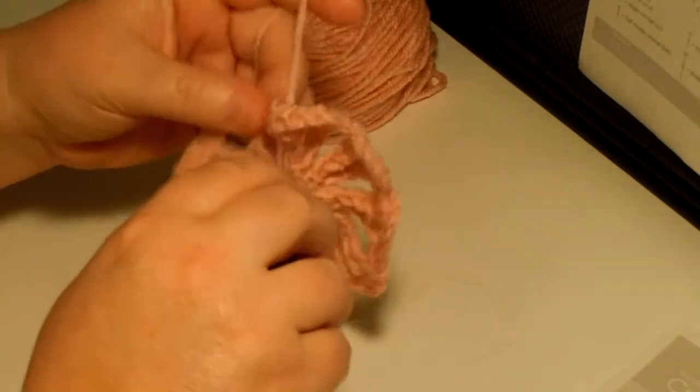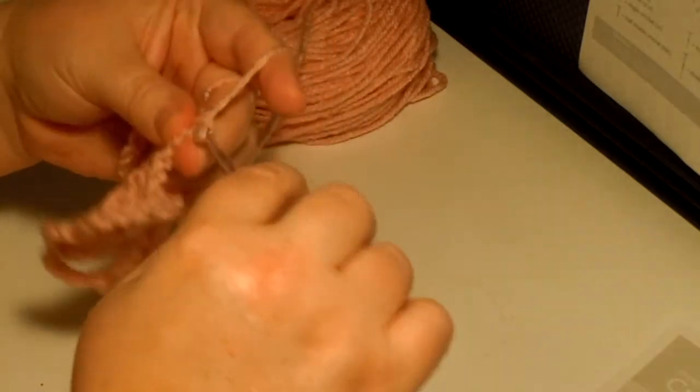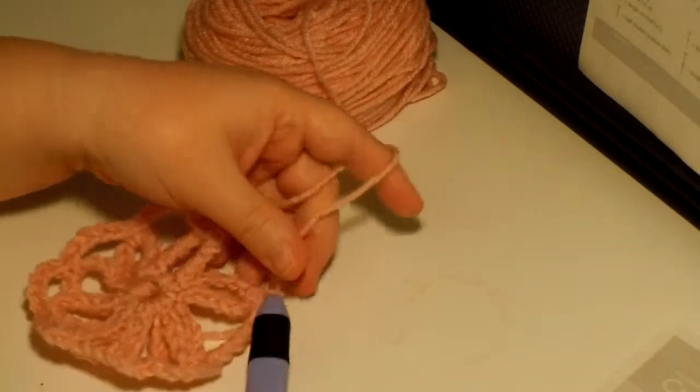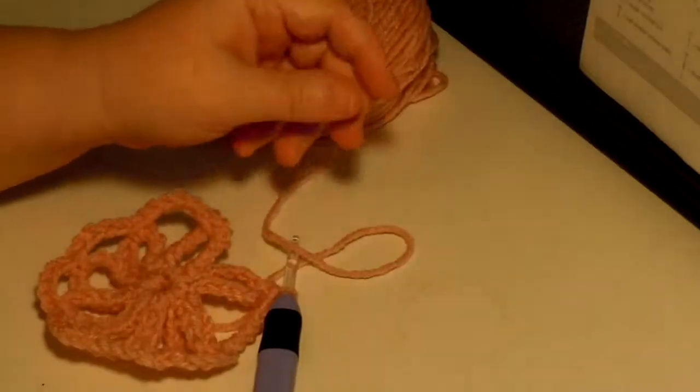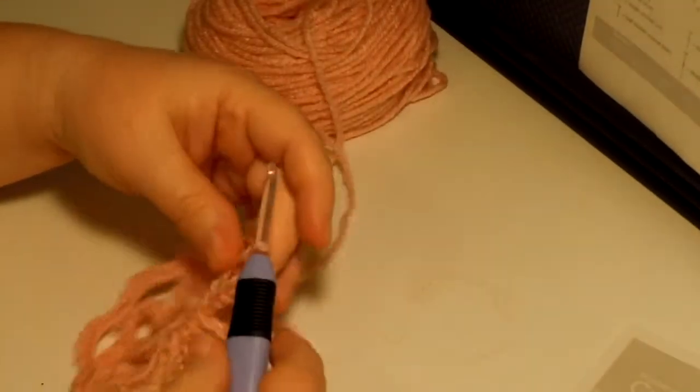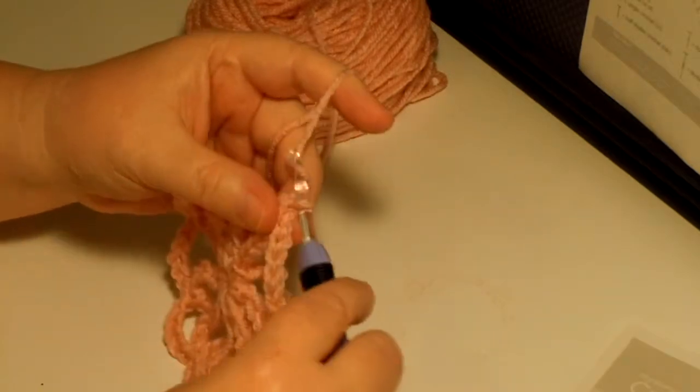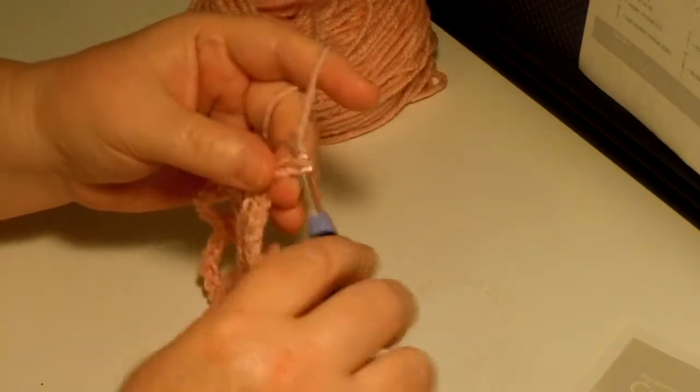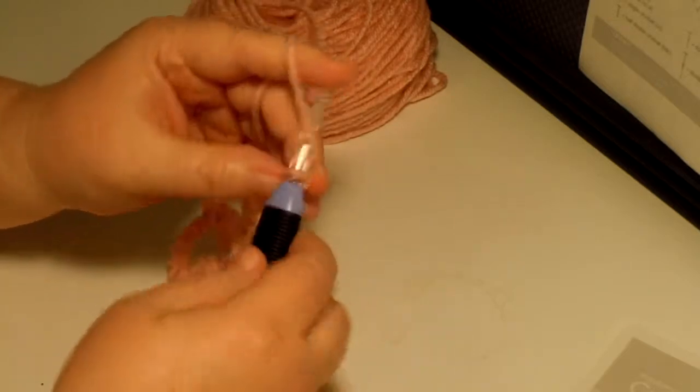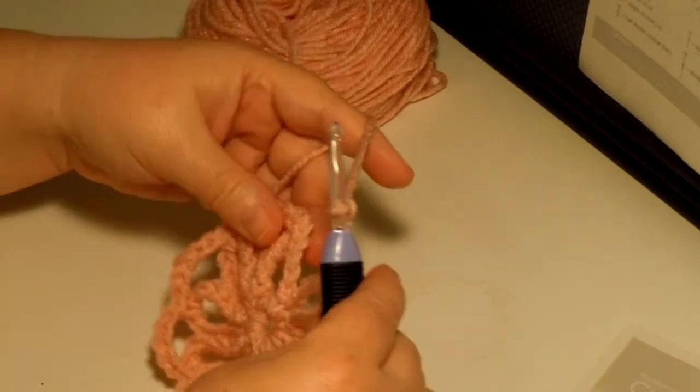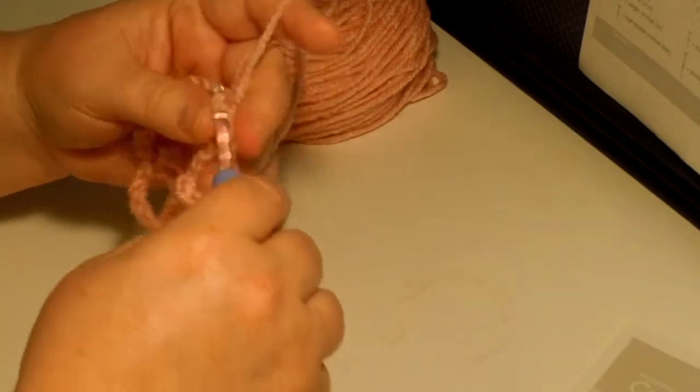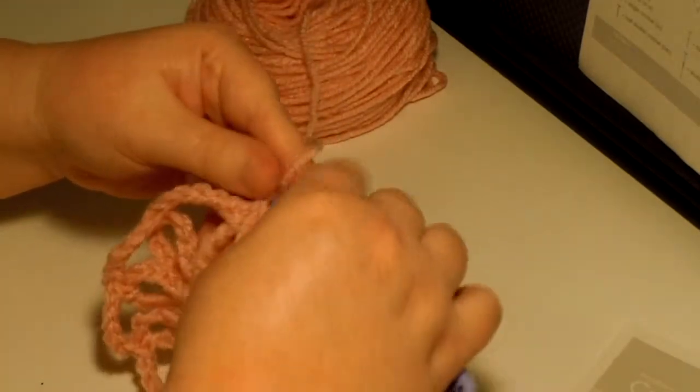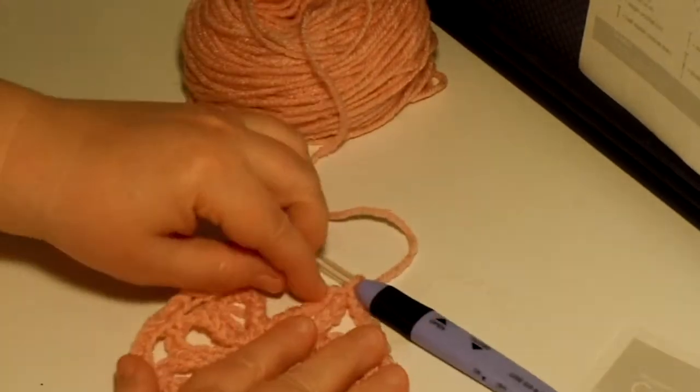Go into that chain eleven space and now we're at the last one. So let's see what the instructions say: chain five and join the slip stitch to the first single crochet. So it's pretty much the same thing. One, two, three, four, five and now we just join it with a slip stitch to the first single crochet right there. Round two is done.